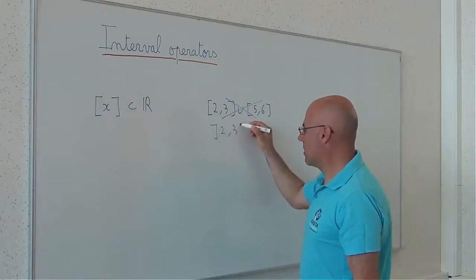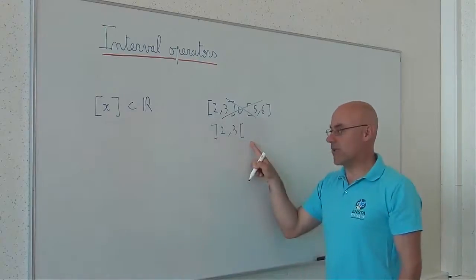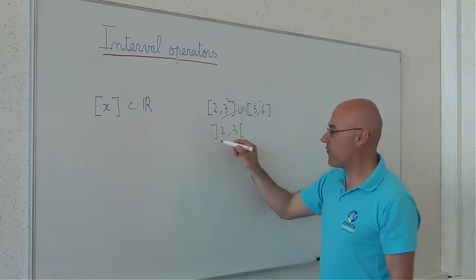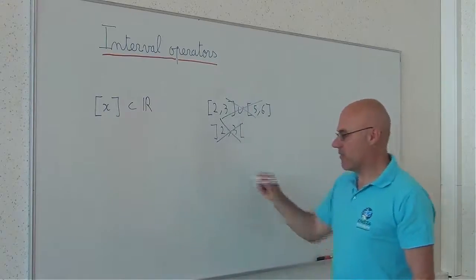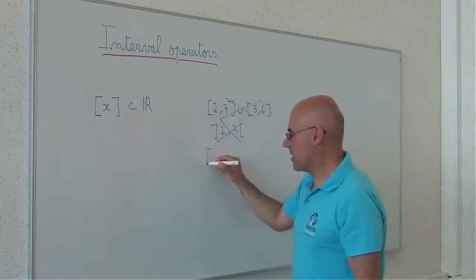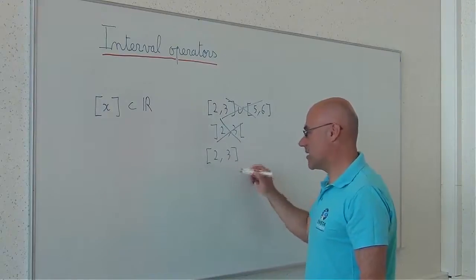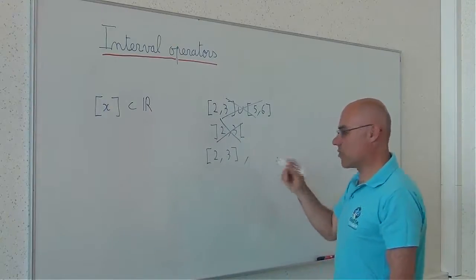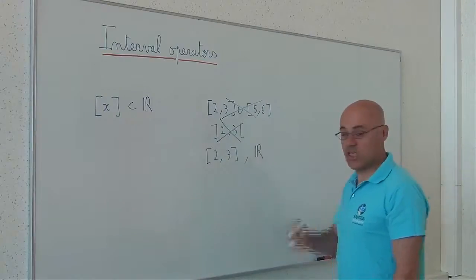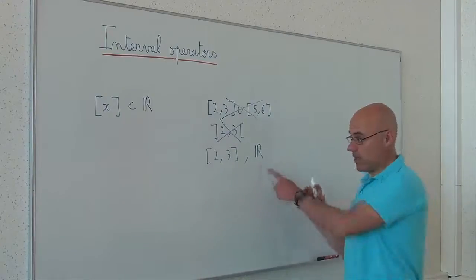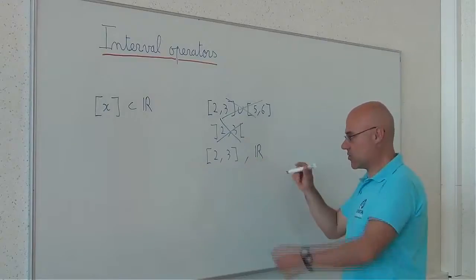(2,3) is an open set — it is not closed. So for us, it is not an interval. An interval, for us, is closed and connected. In such a case, it is an interval. It can correspond also to R, which is an interval, because it is connected and closed also.